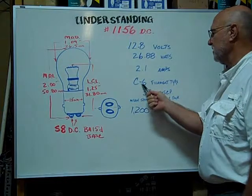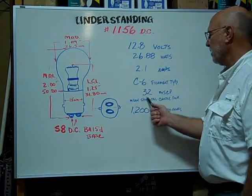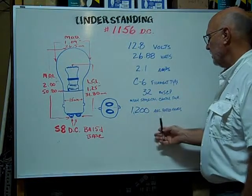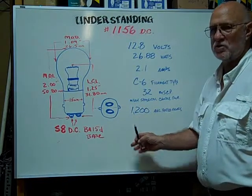Filament type is a C-6. The mean spherical candle power is 32. The average rated hours are 1,200 hours.